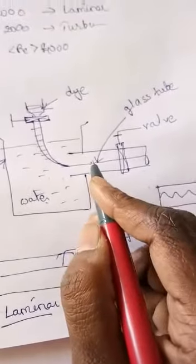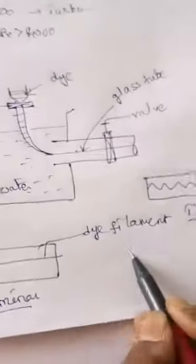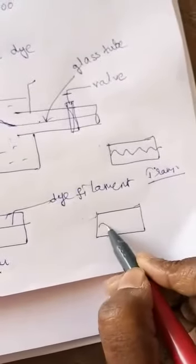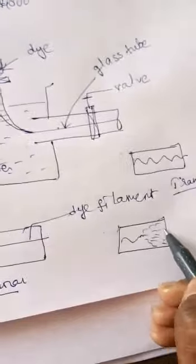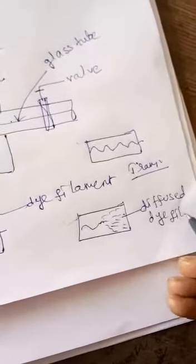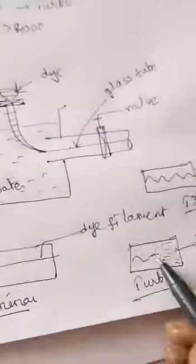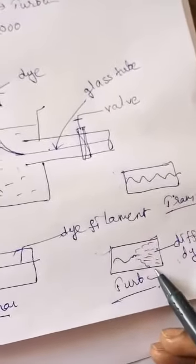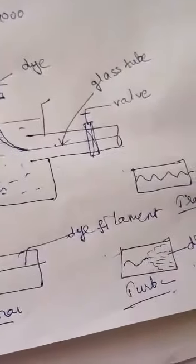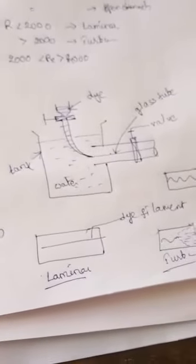If you further increase the velocity of flow, the wavy dye filament breaks up and finally diffuses into the water. This means the fluid particles of dye at high velocity are moving randomly, which represents turbulent flow. In turbulent flow, mixing of the dye filament and water is intense, and the flow is random and disorderly, corresponding to a Reynolds number greater than 4000.